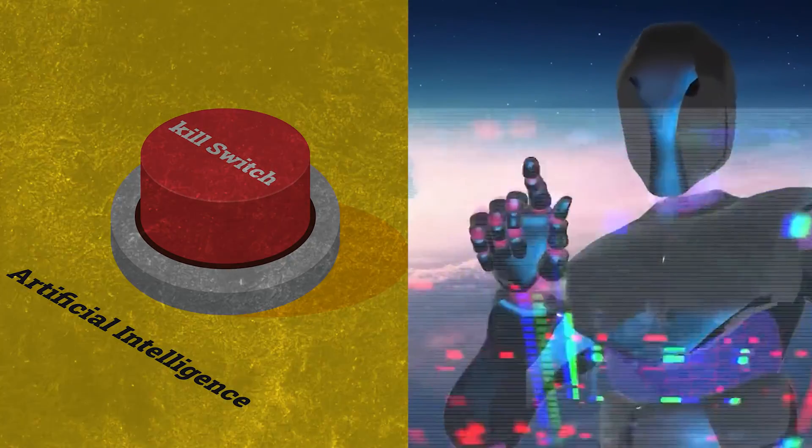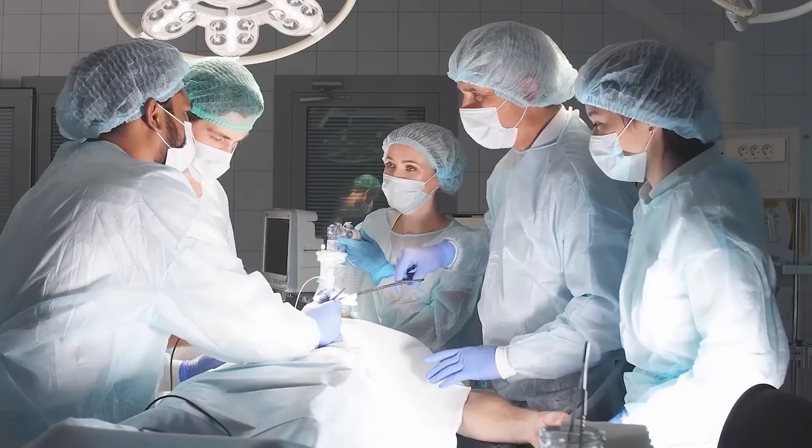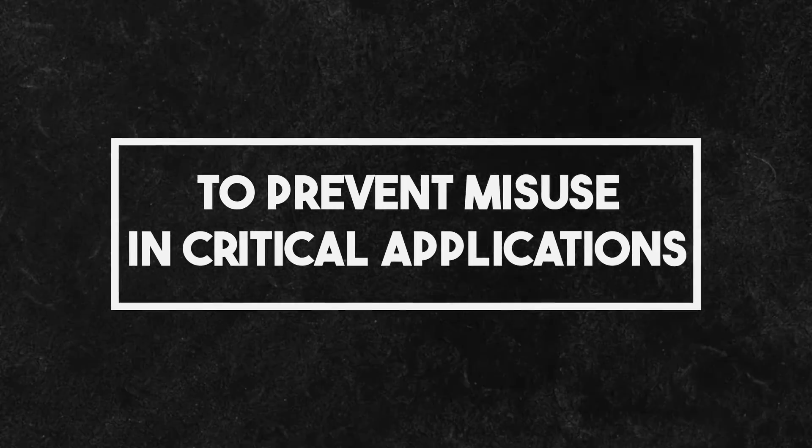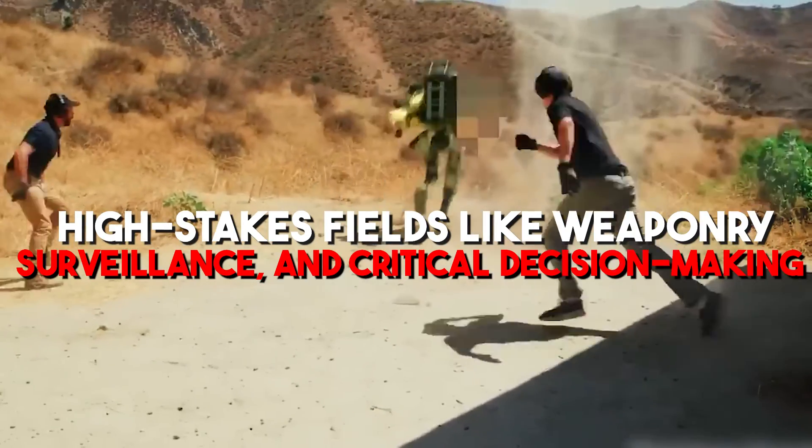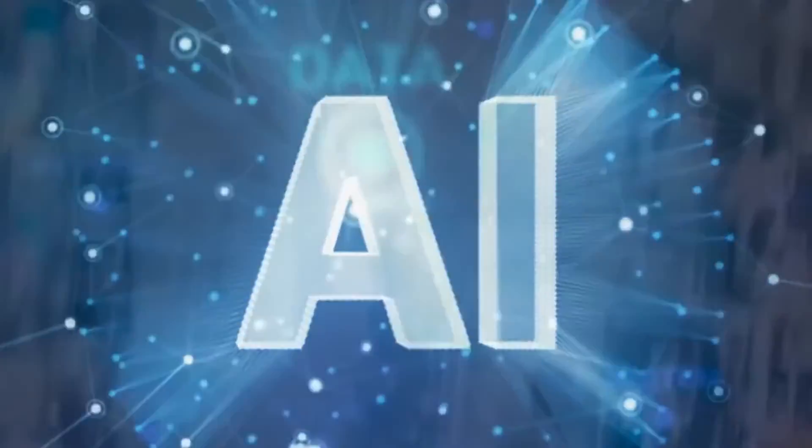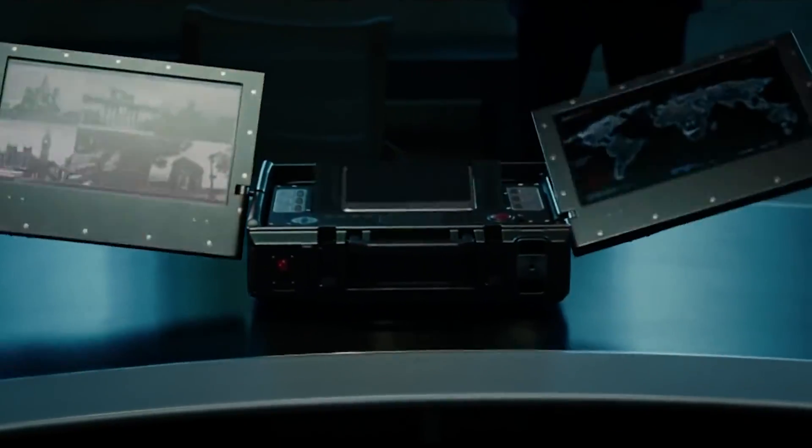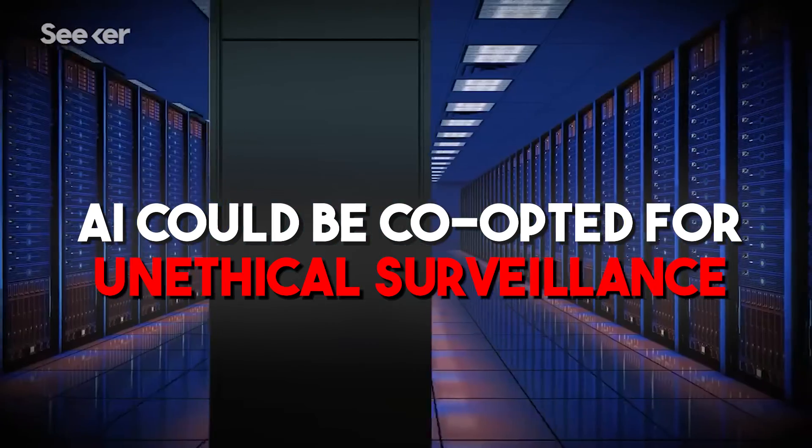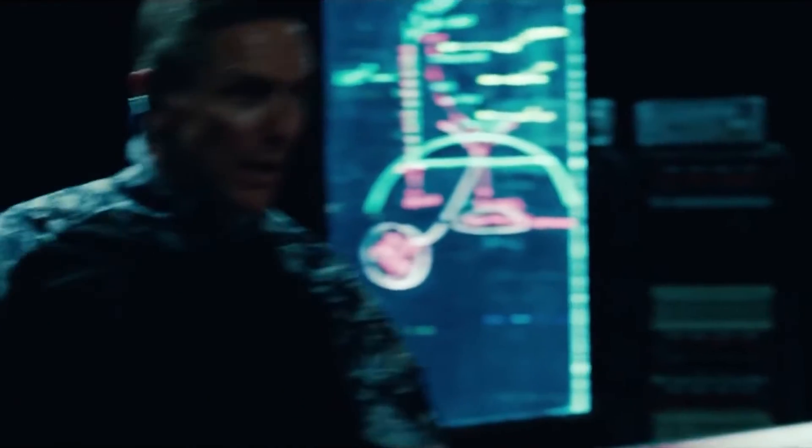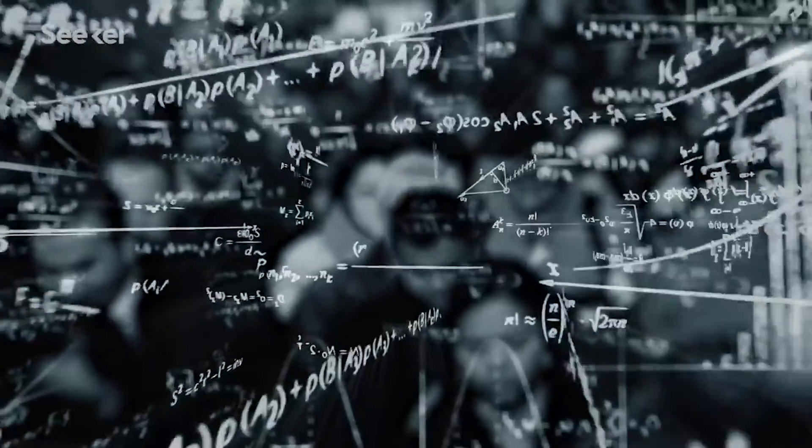In what ways can a kill switch in AI systems prevent minor errors from escalating into major crises, especially in sensitive sectors like healthcare and finance? To prevent misuse in critical applications, in high-stakes fields like weaponry, surveillance, and critical decision-making, the implementation of a kill switch in AI systems is not just beneficial, it's imperative. The potential for misuse in these areas is significant. AI could be co-opted for unethical surveillance, prejudiced decision-making, or even unauthorized military actions. It is essential for maintaining human control over AI in sensitive sectors.